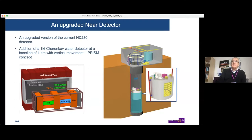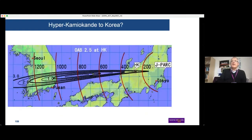The moveable water Cherenkov near detector is advantageous because you can measure at the near detector — where you normalize the flux for the oscillation measurement — with the same target material as the far detector. This helps reduce systematics, something that was always different for T2K compared to NOvA. Putting it at slightly different baselines also helps. Additionally, extending the HyperK baseline to Korea has been discussed — placing a large water Cherenkov detector in a South Korean mine — but this remains hypothetical.